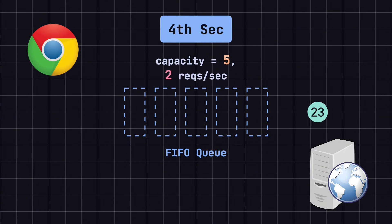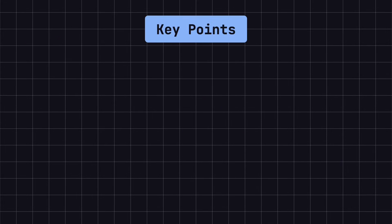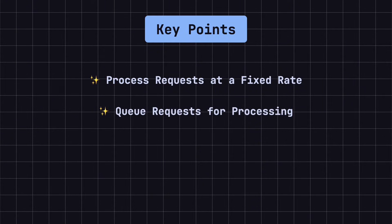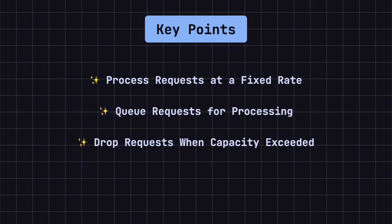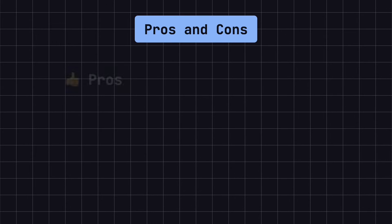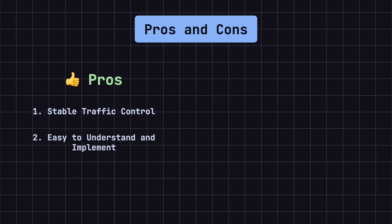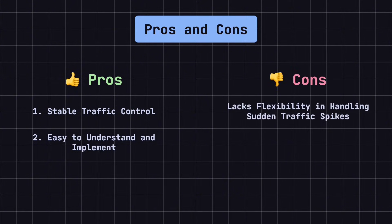In the fourth second, with no new requests, the system processes the last request in the queue, leaving it empty and ready for new requests. As this example shows, the leaky bucket algorithm ensures that requests are processed at a fixed rate. Even if a large number of requests arrive in a short time, the system queues them and processes them steadily, preventing overload. If too many requests arrive and exceed the bucket's capacity, the extra requests are discarded.